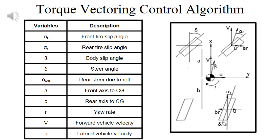The table shows all the important variables needed for a torque vectoring control algorithm that is going to be discussed on the next slide. On the right, you see a diagram of all these variables and where they are located in relation to the center of mass of the car.